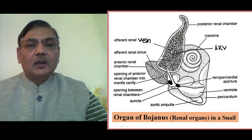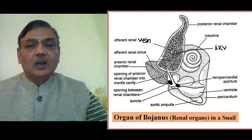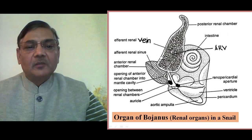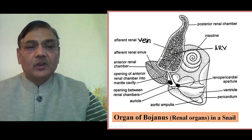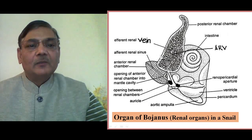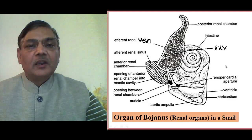These structures are closely associated with other visceral organs, such as part of the alimentary canal. On the right side, intestinal coiling is visible, and on the lower portion, the pericardium — the covering surrounding the heart — is present. Heart chambers such as the auricle and ventricle are visible. The renal chambers are connected with each other and are also connected with the pericardium.